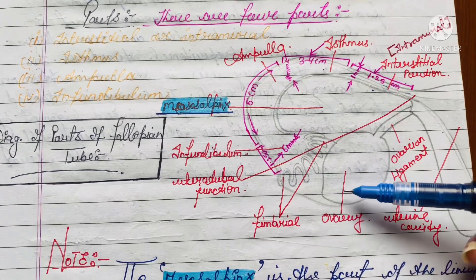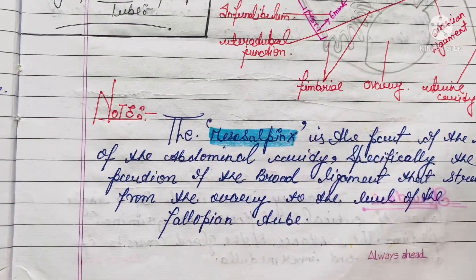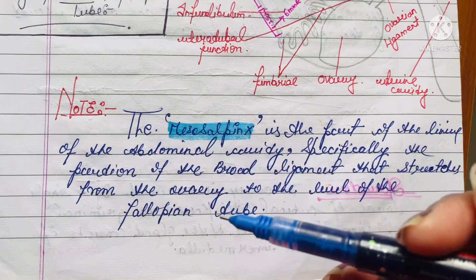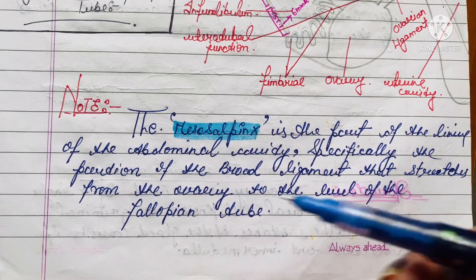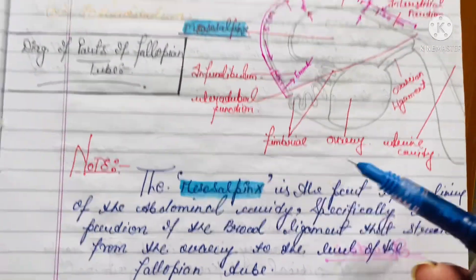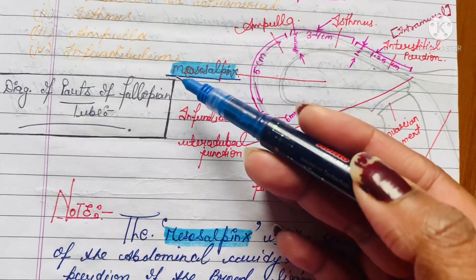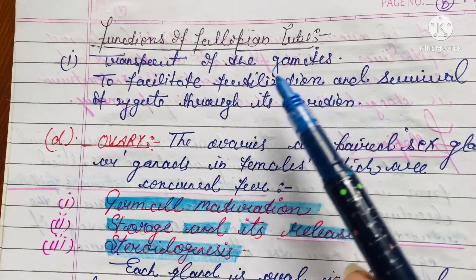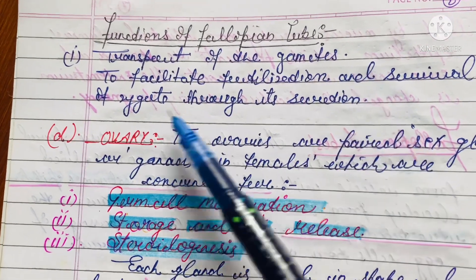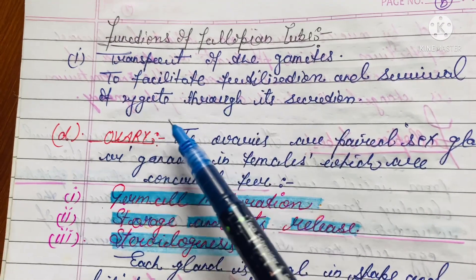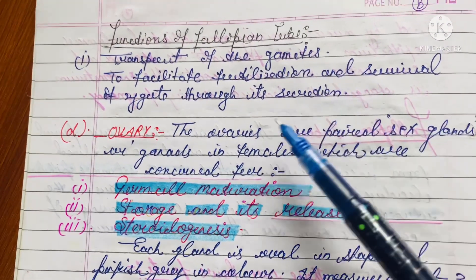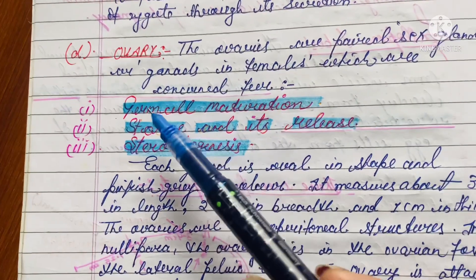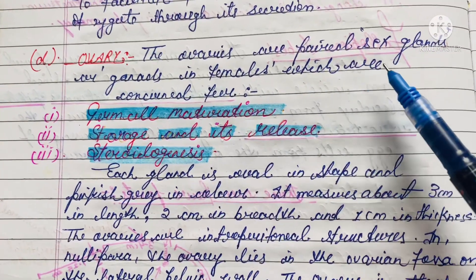The mesosalpinx is the part of the lining of the abdominal cavity — specifically the portion of the broad ligament that stretches from the ovary to the level of the fallopian tube. The functions of the fallopian tubes include transport of the female gametes and facilitating fertilization and survival of the zygote through its secretions.